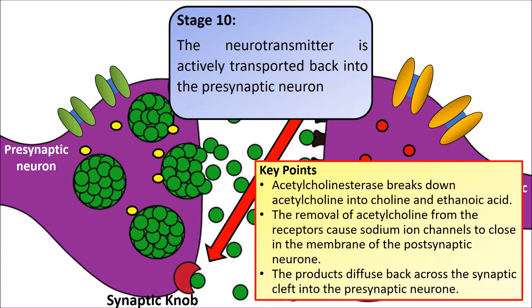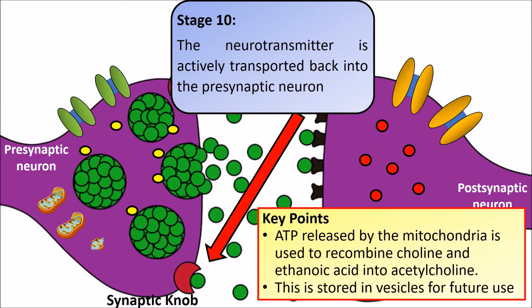It is broken down into choline and ethanoic acid. This is then removed from the sodium channels in the postsynaptic neuron, and the products diffuse back across the synaptic cleft to the presynaptic neuron. ATP, produced by the many mitochondria present, is used to recombine the choline and ethanoic acid back into acetylcholine, which is stored in vesicles for future use.